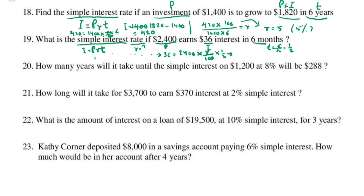Compute r: move all to the left. 36 times 100 times 2 — multiplying both sides by 2 — then divide both sides by 2,400. The answer in the calculator is 3, so the interest rate is 3%.